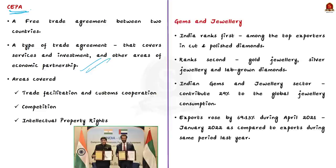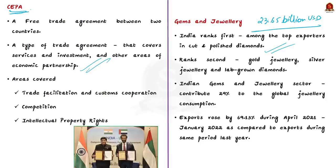A CEPA is a free trade agreement between two countries. It is a type of trade agreement that covers services and investment and other areas of economic partnership — and may even cover trade facilitation, customs cooperation, competition, and intellectual property rights. CEPA also looks into the regulatory side of trade. On those lines, India is going to sign a CEPA with UAE. Indians have always had a fondness for precious stones and jewelry, and trade secrets of the jewelry business have been handed down over generations. As a result, today India is the world's largest diamond cutting and polishing center.